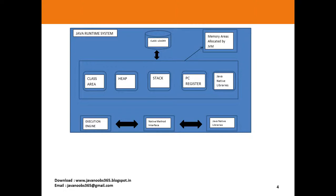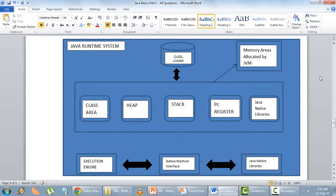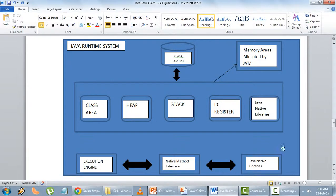In this diagram, this is the Java runtime system. It has a class loader, memory areas allocated by the JVM, an execution engine, a native method interface, and Java native libraries.